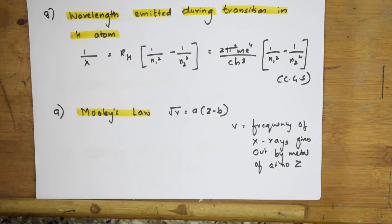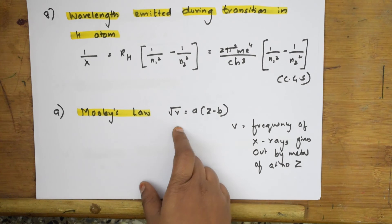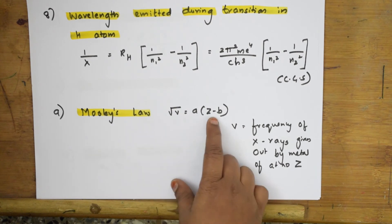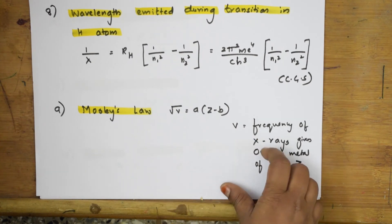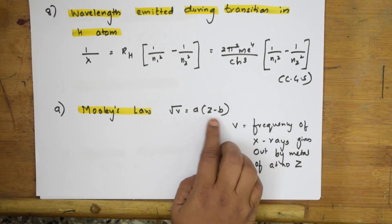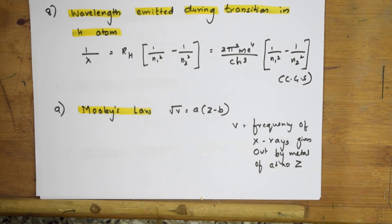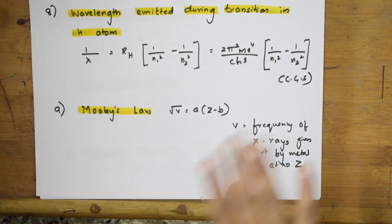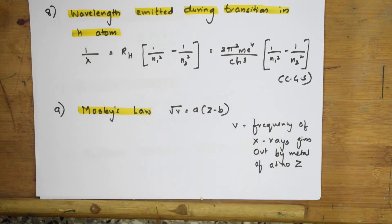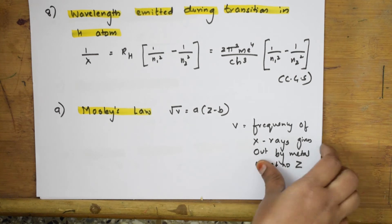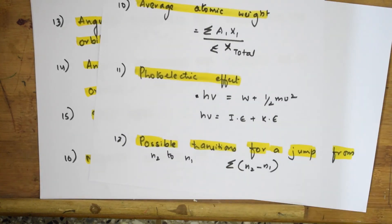On the periodic classification of elements, Moseley's law gives: √ν = a(Z - b), where ν is frequency, Z is the atomic number, and a and b are constants for the two elements being considered.